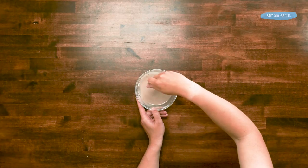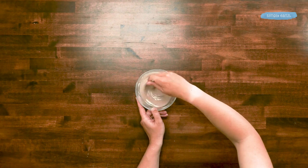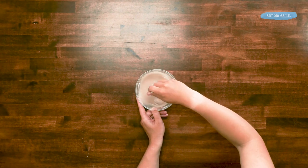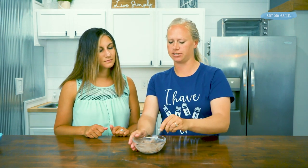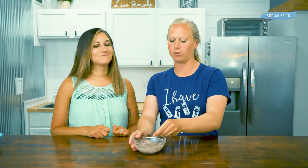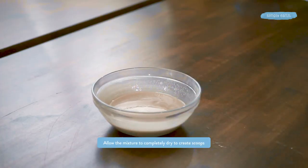So right now our mixture is a little bit gloopy. We can make scoops right now, but they're not going to have that cute ice cream scoop-type shape. So I'm going to put this in the fridge for just a minute or two to help that coconut oil set up so we can get some nice, pretty scoops for our bath recipe.